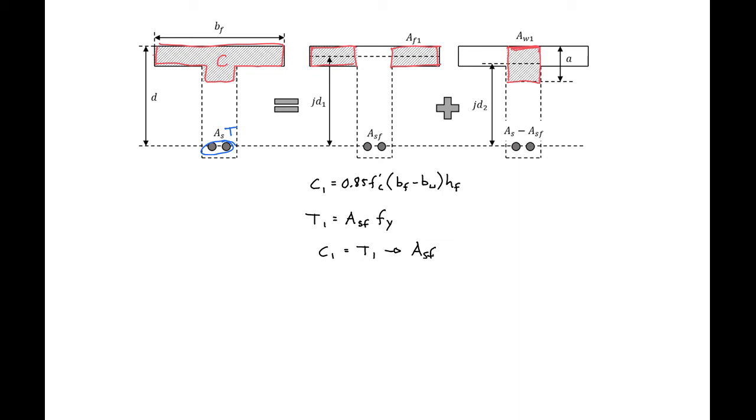In our second diagram, we'll have a c2 equal to our new area aw1 times 0.85 f prime c and our aw1 is equal to a, the depth of our compression block, times bw, the width of our web.